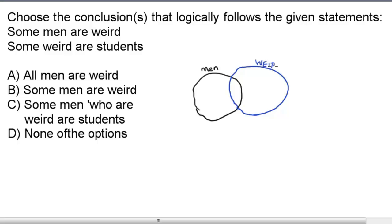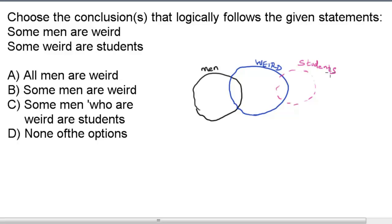The second statement is 'some weird are students,' so there are two possibilities. Either the student circle does not overlap with men, which is shown here, or the student circle can also overlap with men as well as weird, which is being shown now.